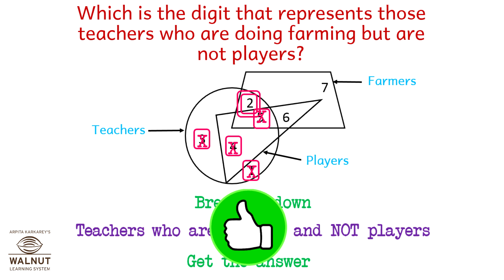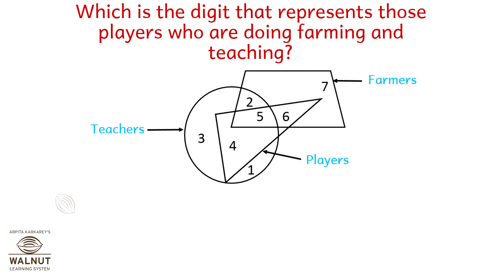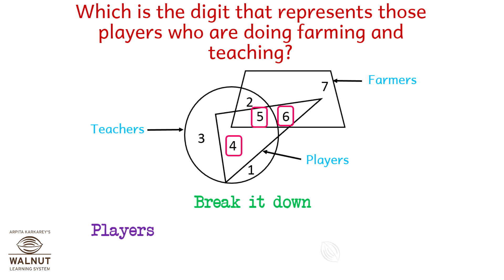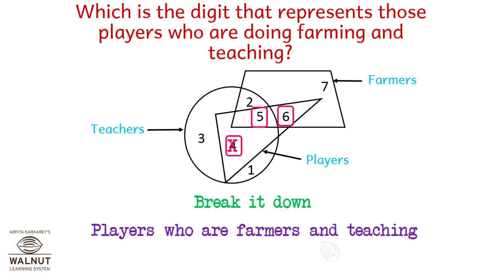There is one teacher who is doing farming and is not a player. Which is the digit that represents those players who are doing farming and teaching? Let us break it down. Select the players: 4, 5, and 6. Players who are farmers are 5 and 6, so cancel out player number 4. But who is teaching? Players who are farmers and teaching — cancel out number 6 to get the answer. So it is number 5.